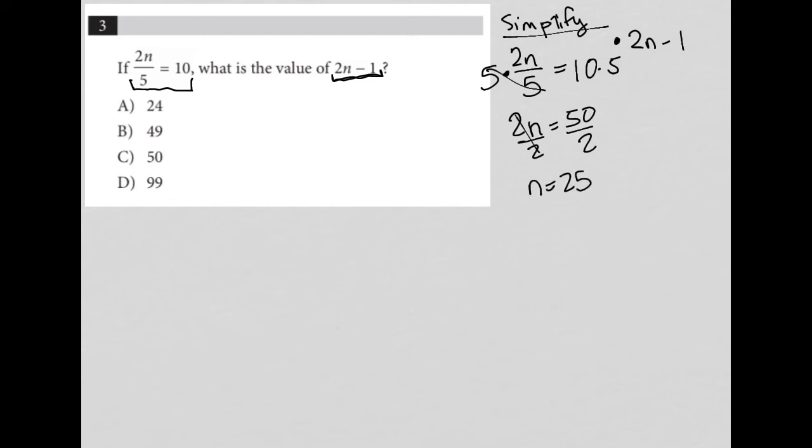And thankfully, 25 is not an option here. But a lot of students, because they're not reading the question carefully, may just go on and choose A because 24 is the closest. And they assume they made a mistake here somehow.